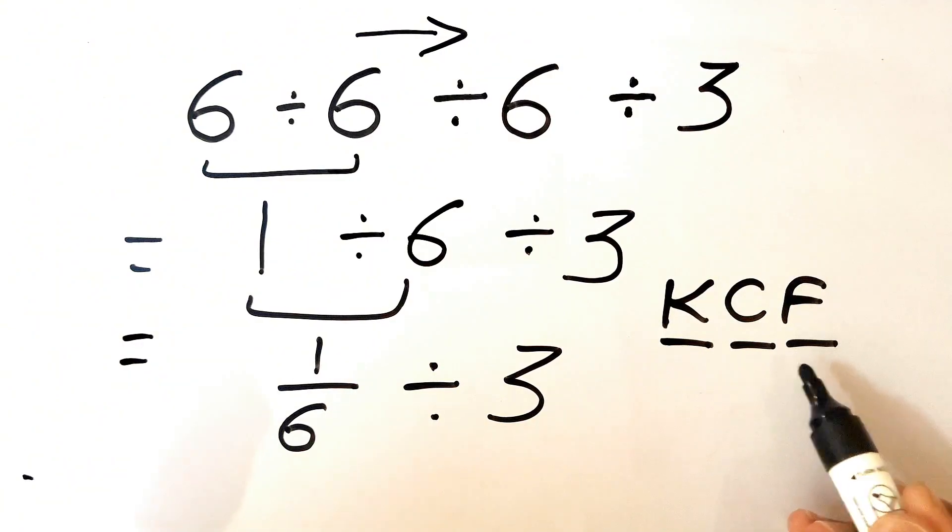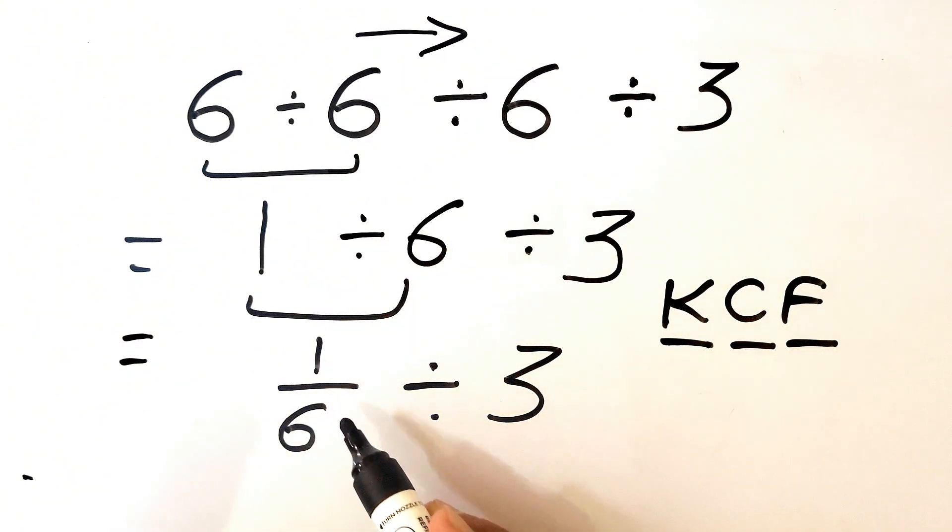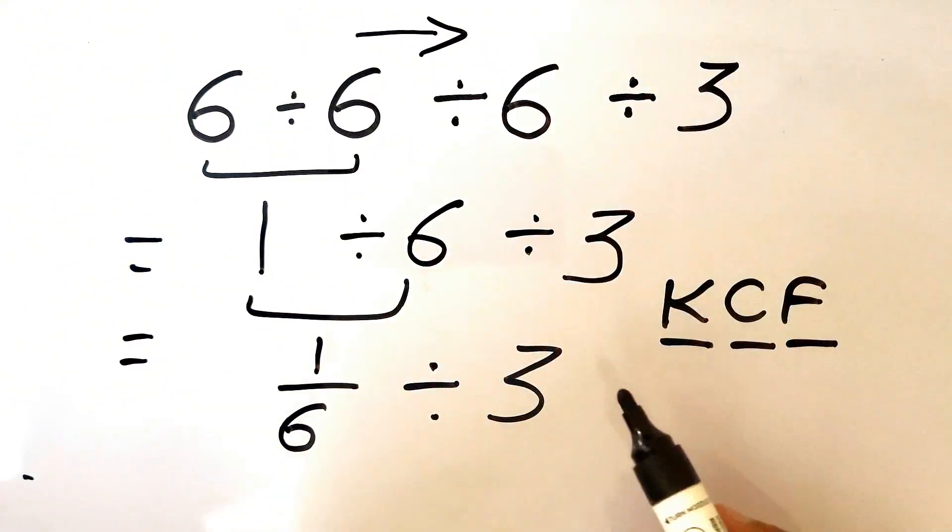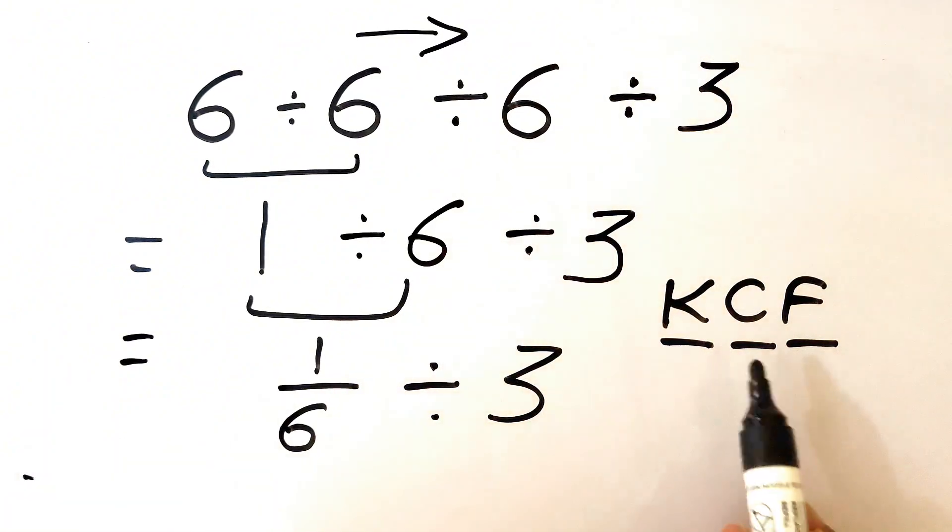It stands for Keep, Change, and Flip, in which we need to keep this 1 over 6 as it is, we need to change the division sign to multiplication, and we need to flip this 3. So let's try solving this with the help of KCF rule.